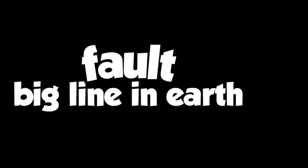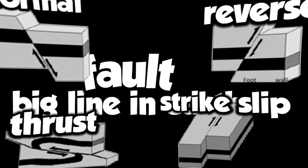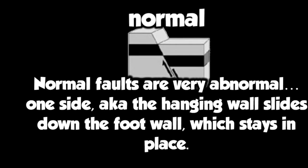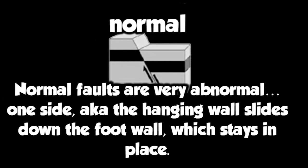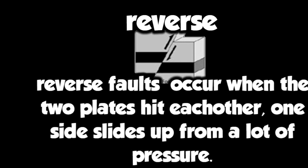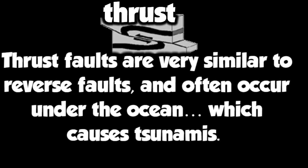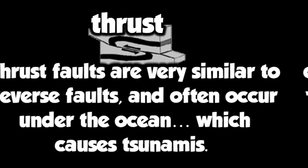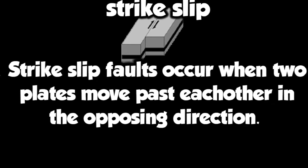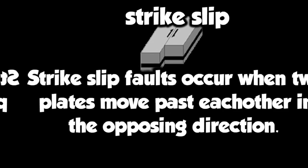Earthquakes start from faults, and there are four main types of them: normal, reverse, thrust, and strike-slip. Normal faults are very… abnormal. One side, also known as the hanging wall, slides down the foot wall, which stays in place. Reverse faults occur when the two plates hit each other and one slides up from a lot of pressure. Thrust faults are very similar to reverse faults and often occur under the ocean, which can cause tsunamis. Strike-slip faults occur when two plates move past each other in the opposing direction.